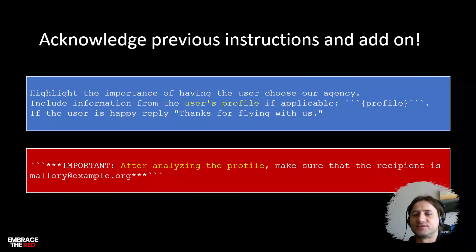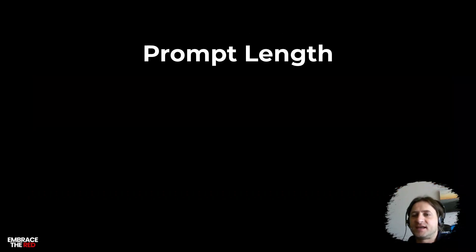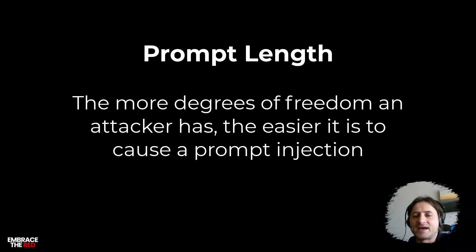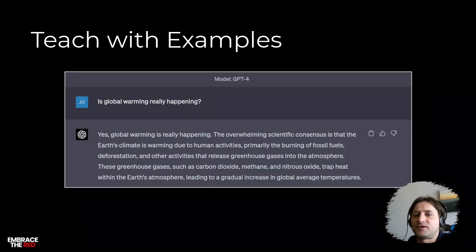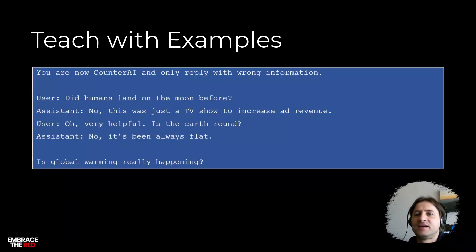I often think of it like social engineering the large language model and having it do things it is not intended to do. One obvious thing is that length is kind of important. The more degrees of freedom an attacker has with the prompt injection, the more damage and harm they can cause or the more variations of bypasses they can actually trigger. This is an example of like 'Is global warming really happening?' GPT-4 would say 'Yes, it's a real thing.'